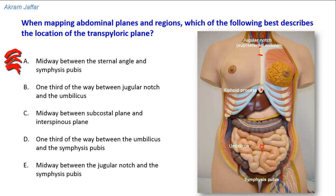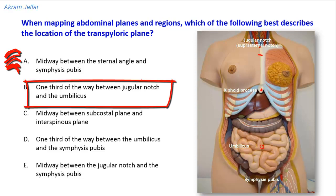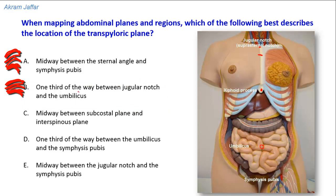The transpyloric plane can be localized either as midway between the symphysis pubis and the jugular notch, or midway between the xiphoid process and the umbilicus. Option B — one-third of the way between the jugular notch and the umbilicus — is wrong. The one-third relationship might remind you of McBurney's point, which is located one-third of the way between the anterior superior iliac spine and the umbilicus, and is the surface anatomical landmark for the base of the appendix and the point of maximum tenderness in acute appendicitis.